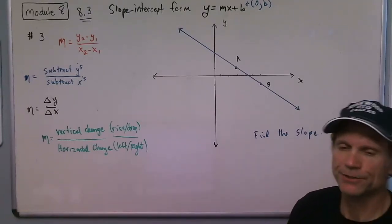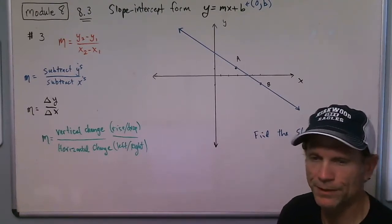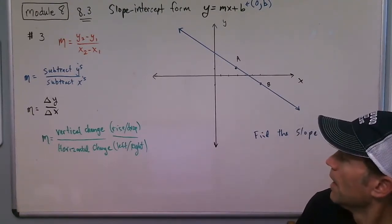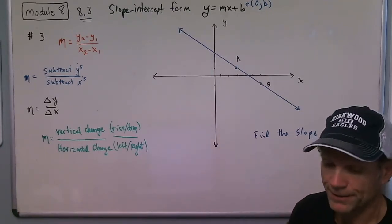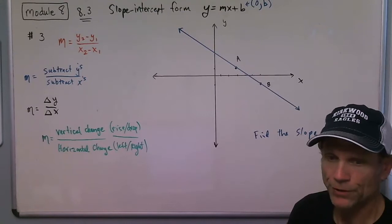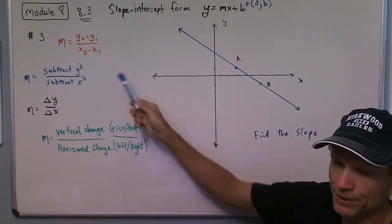All right, continuing our discussion on slope intercept form and particularly slope. In this problem, we're given a picture and then we're asked to find the slope of the line. I wanted to go over a couple different methods with you here, and I wrote some notes over here that are on your note packet also.